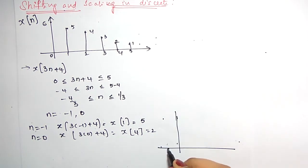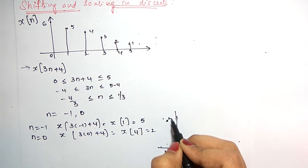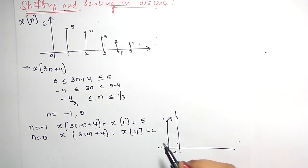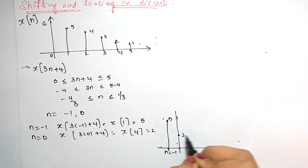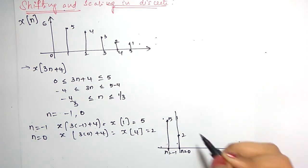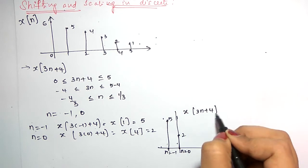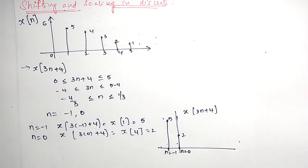So at n equals minus 1 the value is equal to x of 1 which equals 5, and at n equal to 0 the value equals x of 4 which is equal to 2. This is how your signal will look after scaling and shifting.